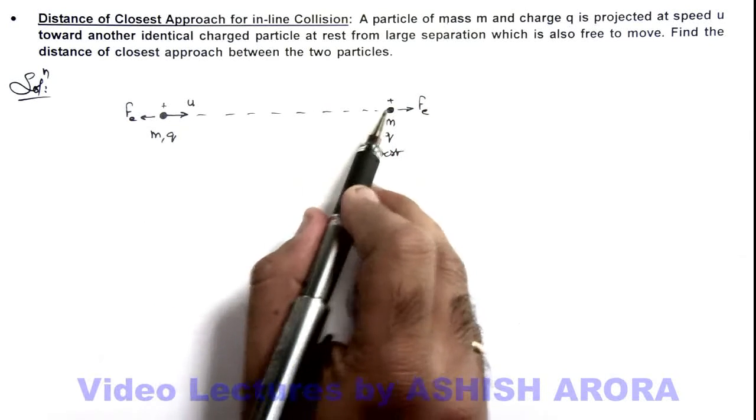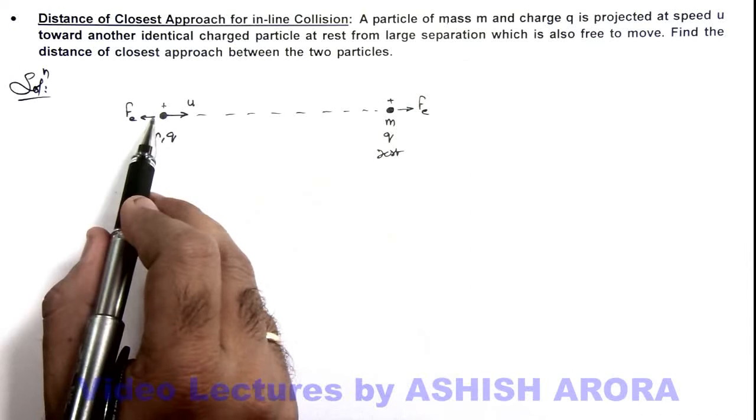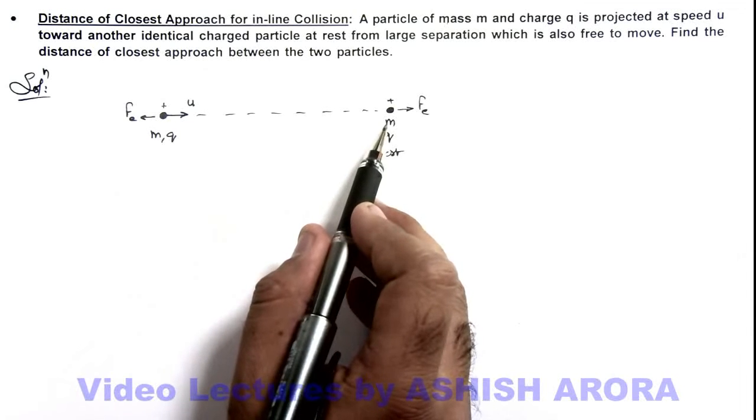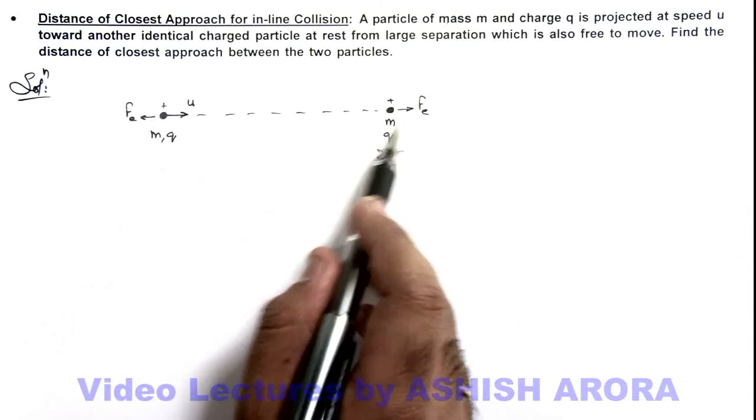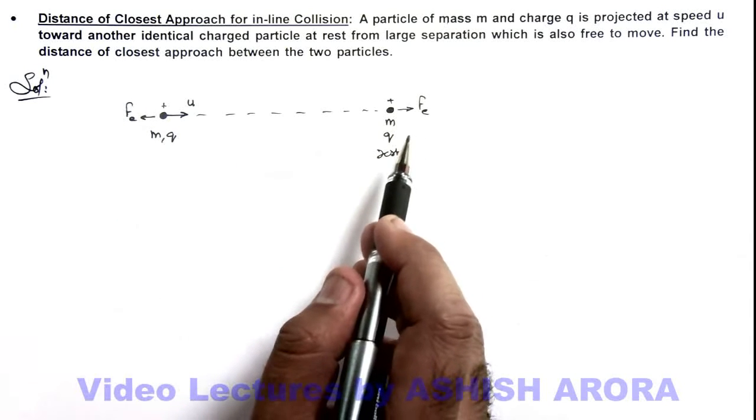One will be accelerated, the other will be retarded. As equal force is acting on the two, the net external force on the system is zero. Being an internal force, the total momentum of the system will remain conserved.